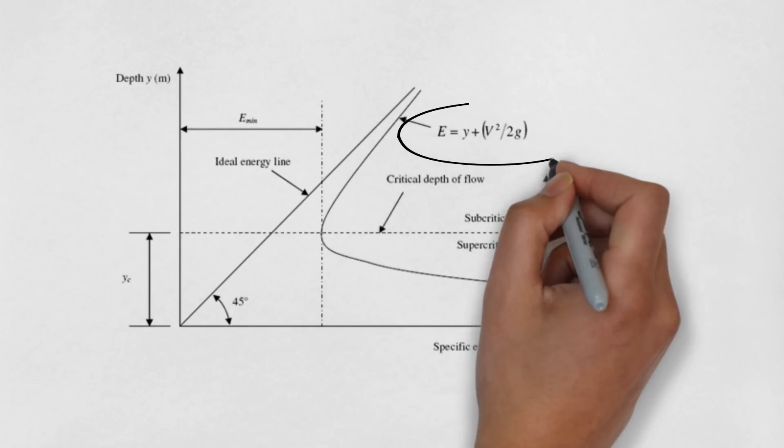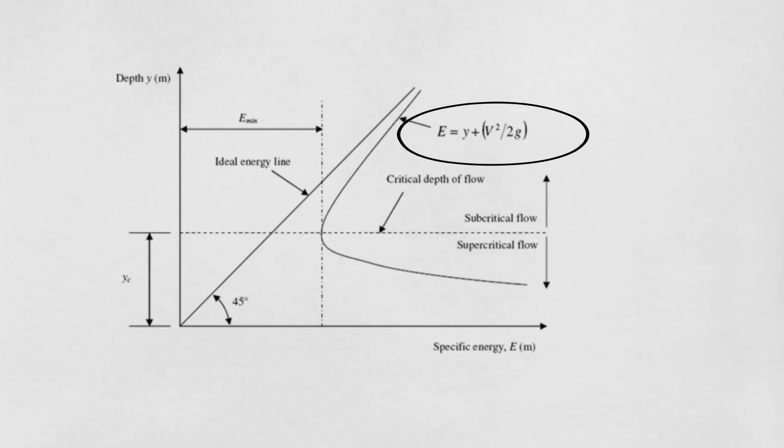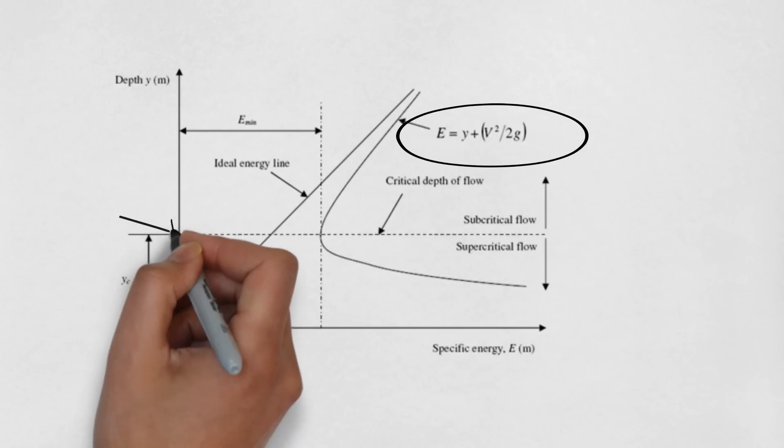The curve on the right hand side represents the variation of the specific energy with respect to the depth of flow. The dotted line represents the critical depth.